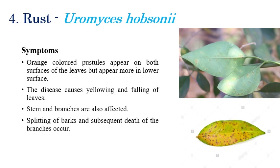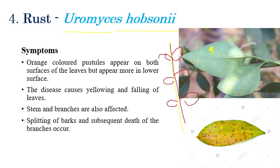Rust is caused by Uromyces hobsonii. Small pustules appear on both the upper and lower surfaces of leaves. Yellowing of leaves can also be seen. On the lower surface, more pustules are present compared to the upper surface — this is one of the prominent symptoms. Stems and branches also get affected in later stages.